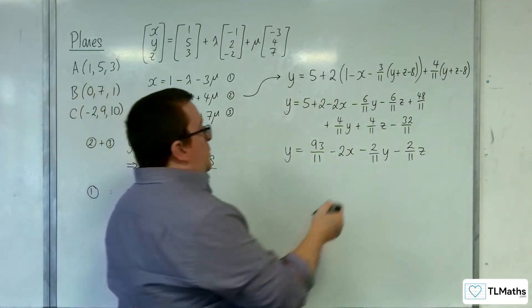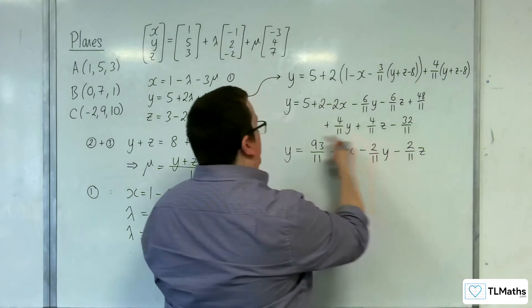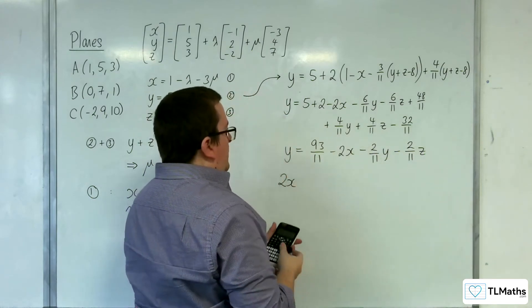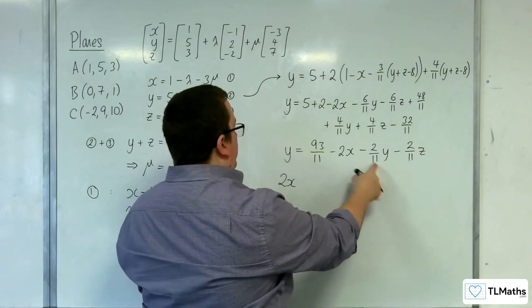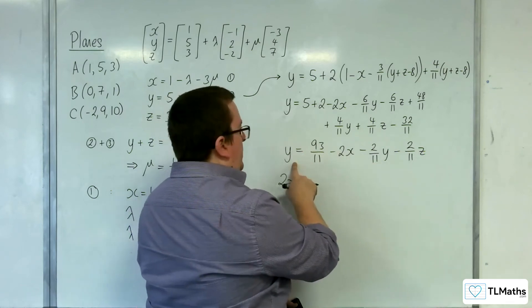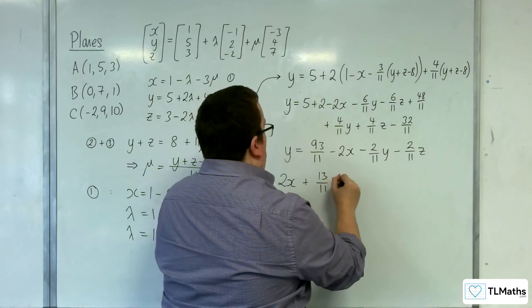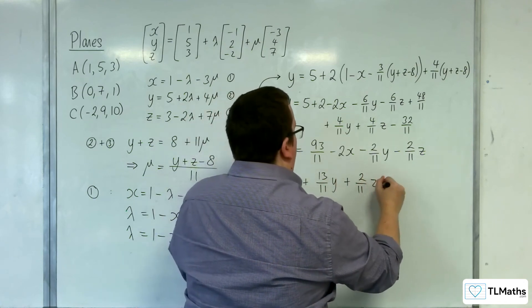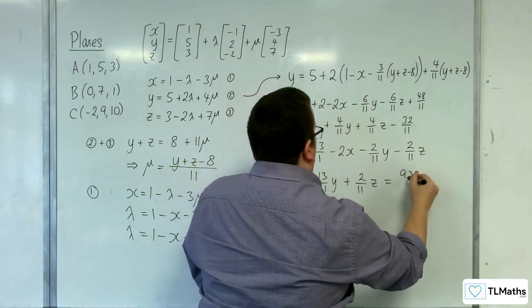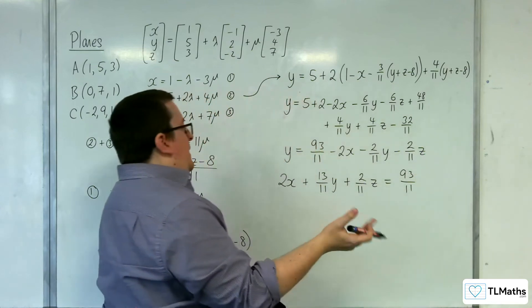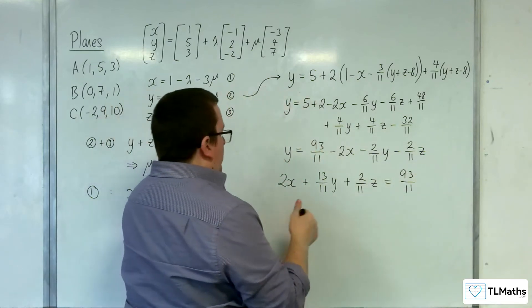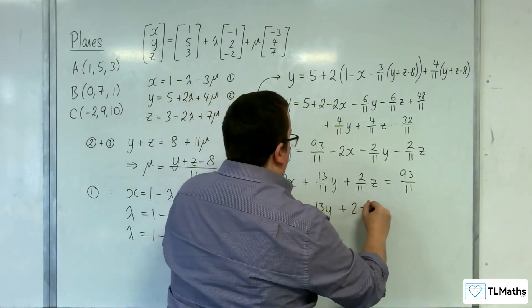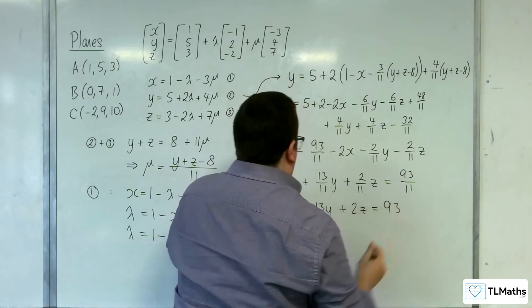Right, okay, it's looking a little bit better. So what I'll do is I'll move these three terms onto the left-hand side, giving me 2x. Then I've got 2 elevenths plus 11 elevenths, so 13 elevenths y plus 2 elevenths z equals 93 elevenths. And let's get rid of the elevenths. So I'll multiply through by 11. 22x plus 13y plus 2z is equal to 93.